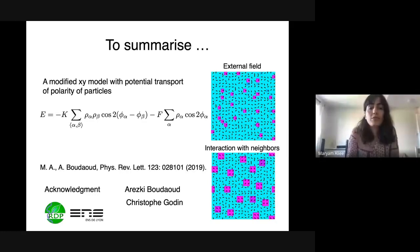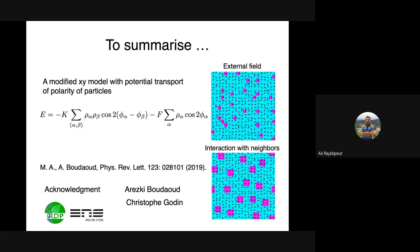To briefly summarize, this is a very simple model based on a modified XY model with potential transport of polarity particles. This simple model can express non-trivial dynamics and pattern formations. What I showed were equilibrium state results published in this paper. I'd like to thank my collaborators Orski for all the support and Christophe Godin. Thank you.